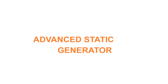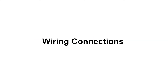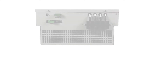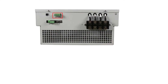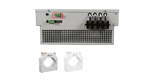Advanced Static VAR Generator — Wiring Connections. In the power side connectors, there are RYB and neutral. The lower side is meant for customer side connection for RYB and neutral, and earth will be connected here. In the control side, we have RYB, S1, and S2 — these 6 connections come from CTs connected at the customer end.